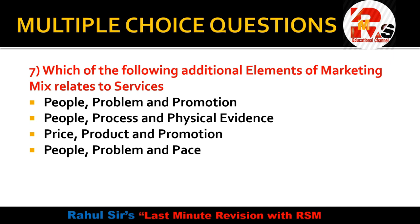Question number 7: Which of the following additional elements of the marketing mix relate to services? You may be aware there are four P's in the marketing mix: product, price, place, and promotion. But there are three extensions used in service marketing. The options include people, process and physical evidence. The correct answer is people, process, and physical evidence — these three elements are added for service marketing, making a total of seven P's.